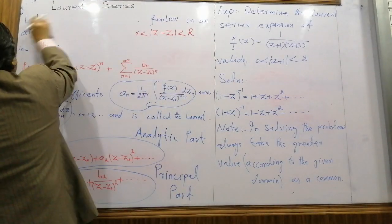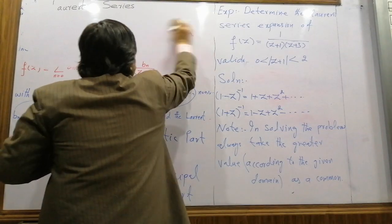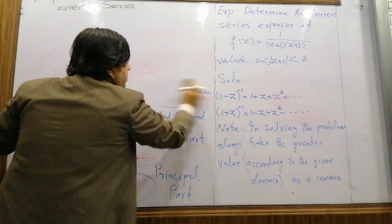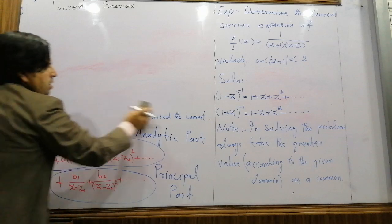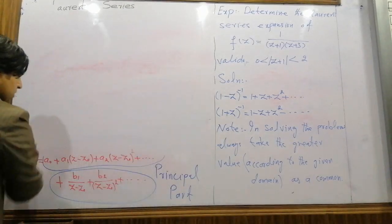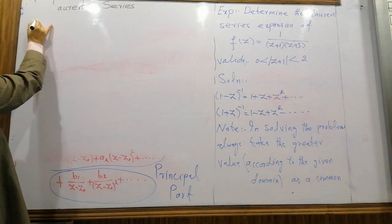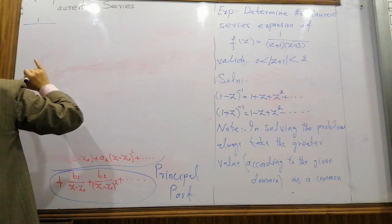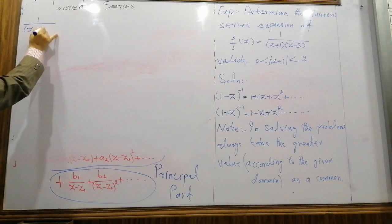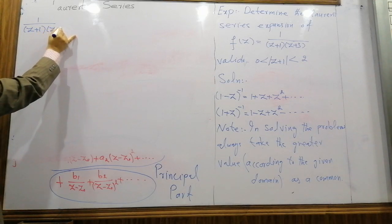Let us solve this problem. The example is: determine the Laurent series expansion of f(z) = 1/[(z+1)(z+3)] in the domain 0 < |z+1| < 2. To solve this, first we have to split this using partial fractions.